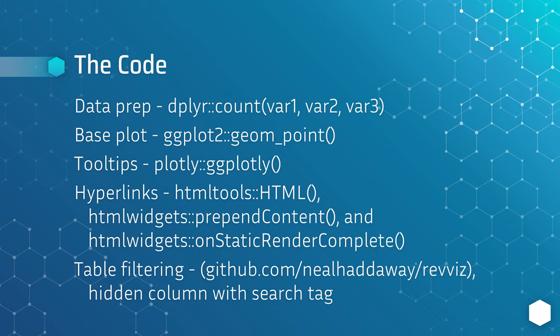The main components of the package are as follows: data preparation for the summary data needed across three variables uses the count function. The base plot is a geom_point plot. Tooltips are provided by converting the plot to an HTML output in Plotly, and hyperlinks are then appended as JavaScript to the HTML output afterwards. The table shown in the previous slide is produced using the reactable package, which uses a hidden column in the table to filter results for each bubble — but actually any other link can be embedded in the bubble too.